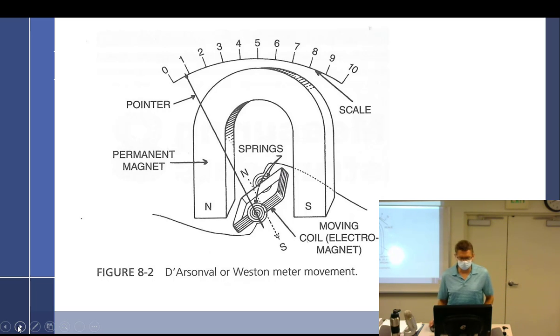All right, so indicating needle. The indicating needle is attached to a movable coil. So there we see the coil right there with a coil of wire on there, and you have your permanent magnet.